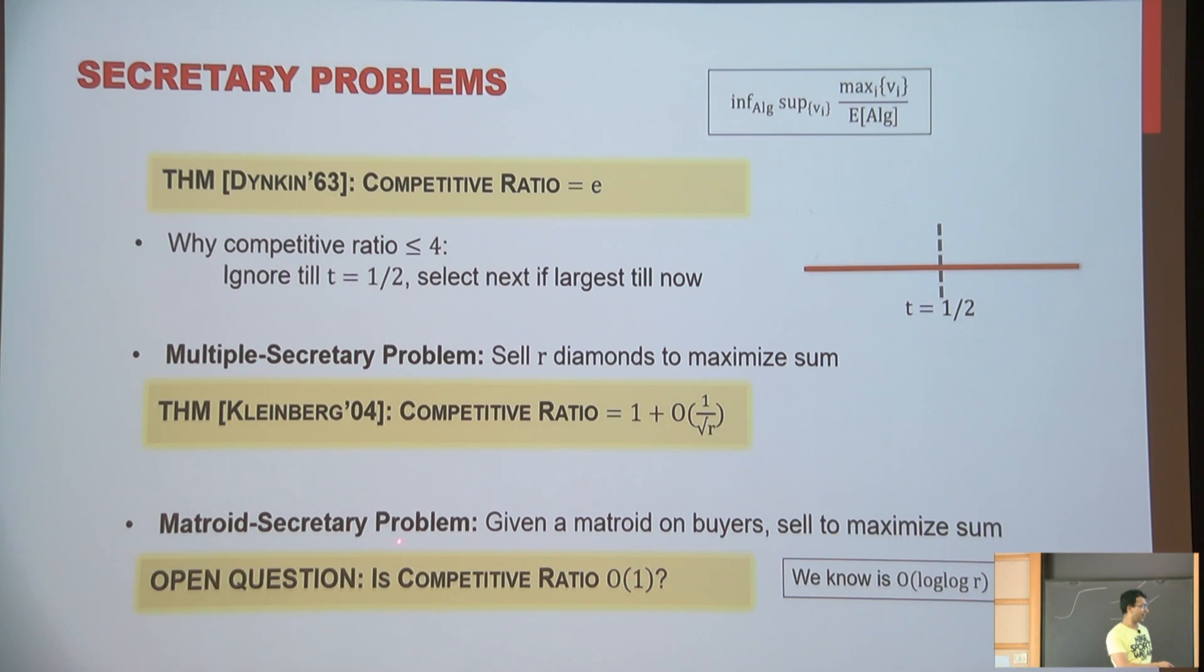The question is, can you design a constant approximation, competitive ratio algorithm for this Matroid secretary problem, where the subset of buyers you select have to form an independent set in your Matroid. So we know the answer is like log log R. Under many special classes of Matroids, we know constants. I have also done some work, but the main question is still open, can we get a constant here?